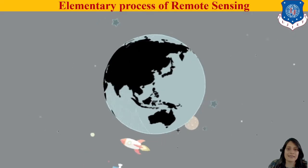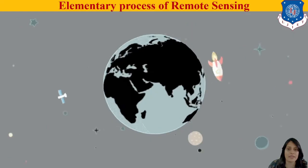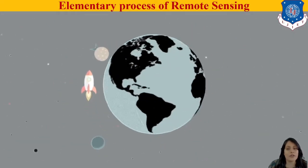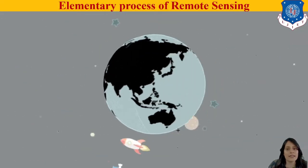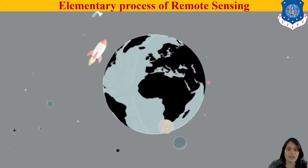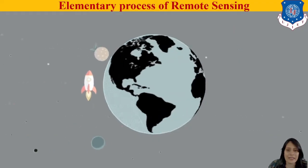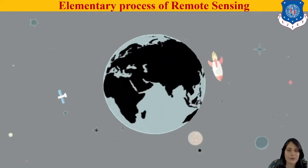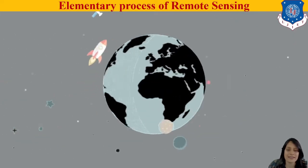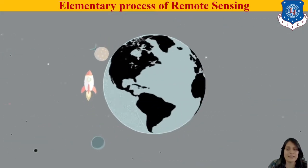The very first process — the elementary process of Remote Sensing. You can see in the presentation background, a rocket is moving around the globe, around the Earth, and it is capturing some data. There is also a satellite revolving, stars, planets — and we are taking information from them. So let's discuss that in detail.